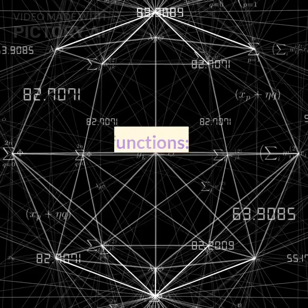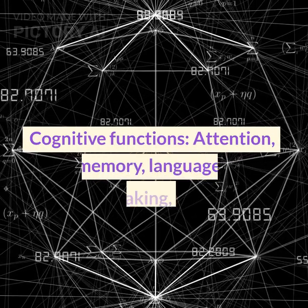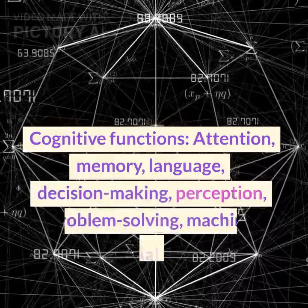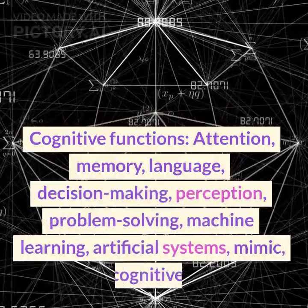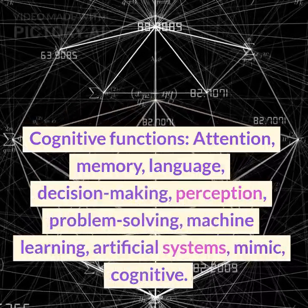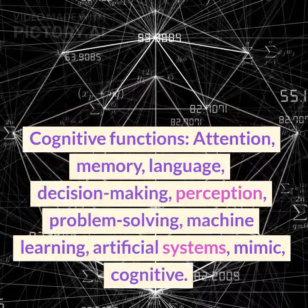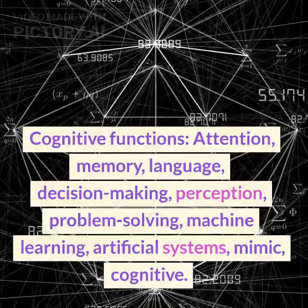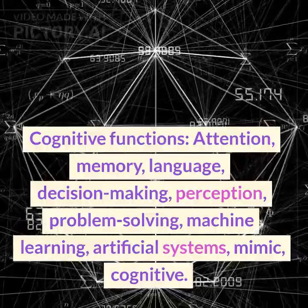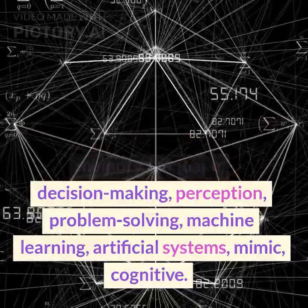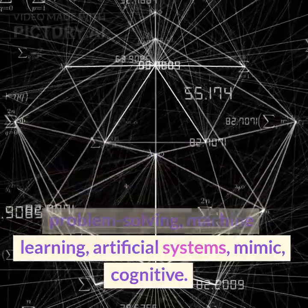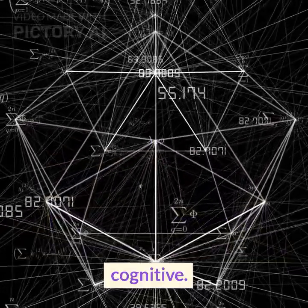4. Cognitive functions: attention, memory, language, decision-making, perception, problem-solving, machine learning — artificial systems that mimic cognitive functions.